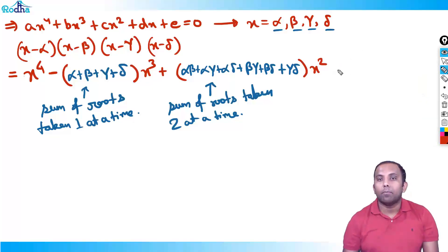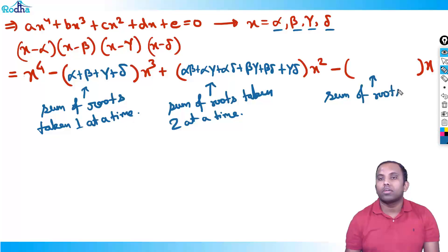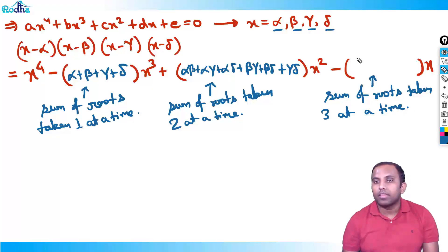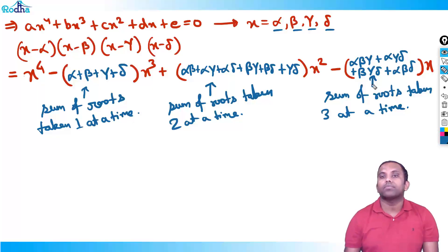After the plus sign comes a minus sign. The coefficient of x is the sum of roots taken three at a time. Taking α,β,γ,δ three at a time gives four terms: αβγ + αγδ + βγδ + αβδ. That is four terms.